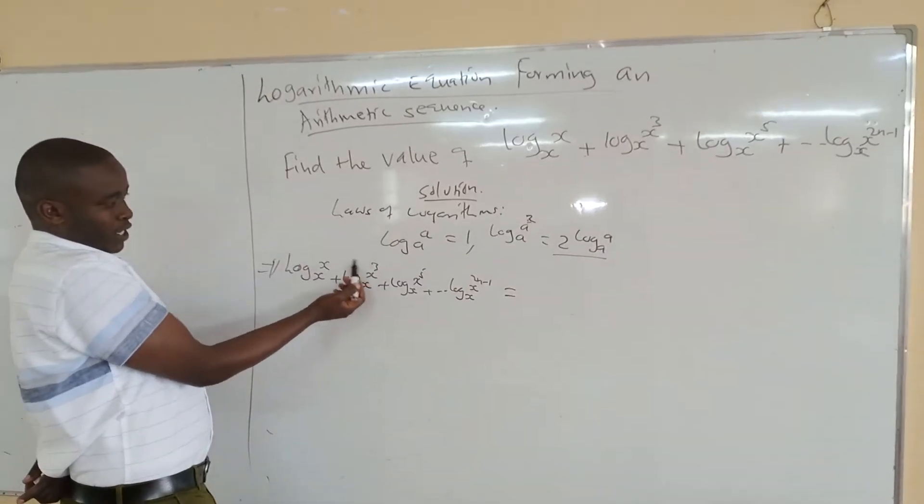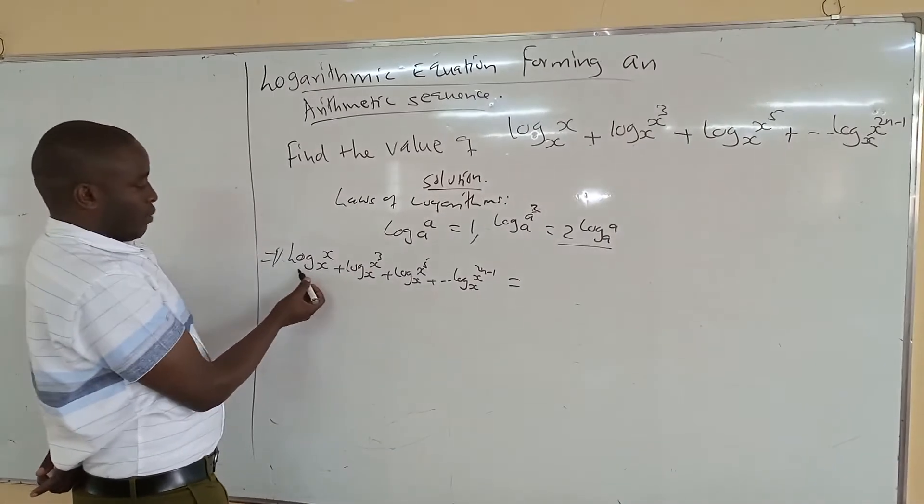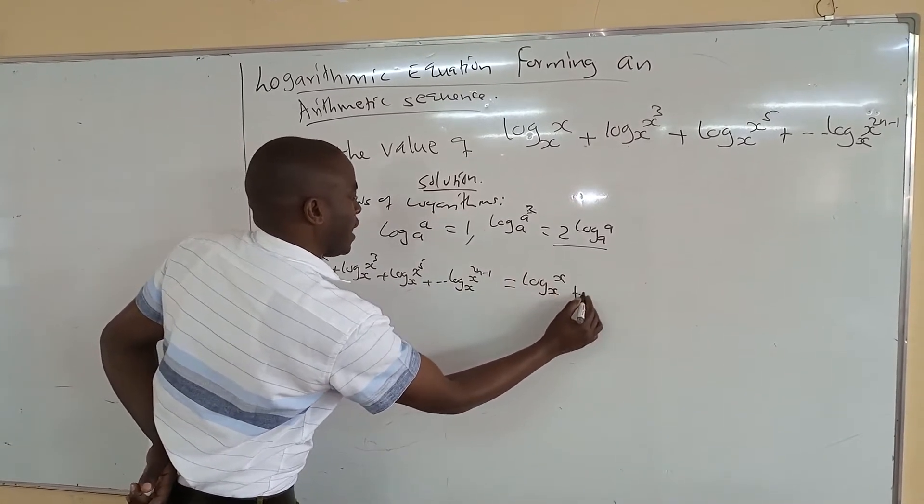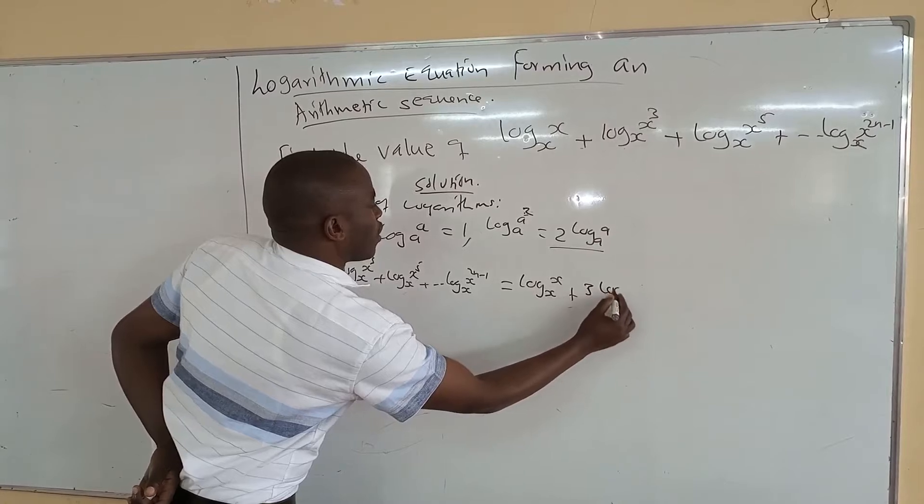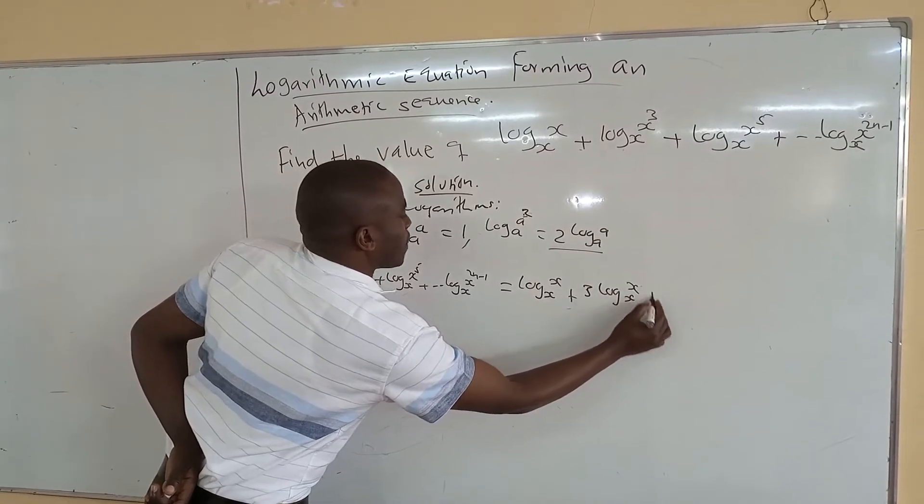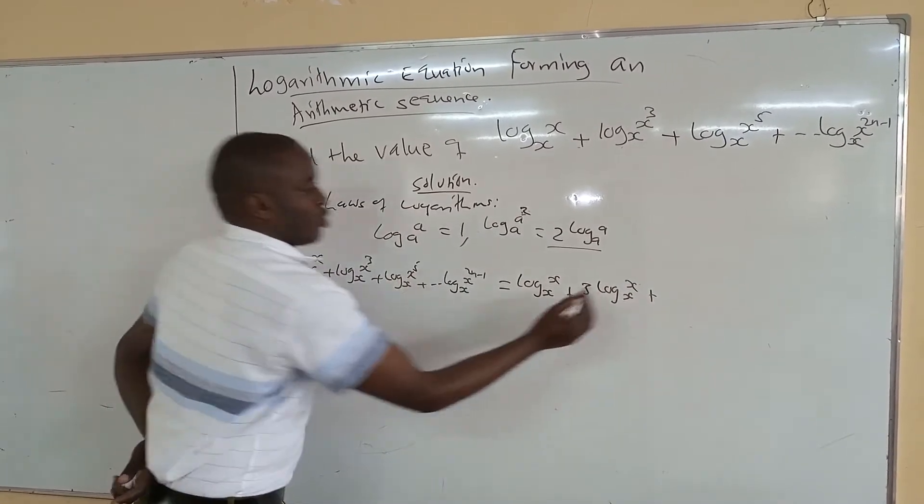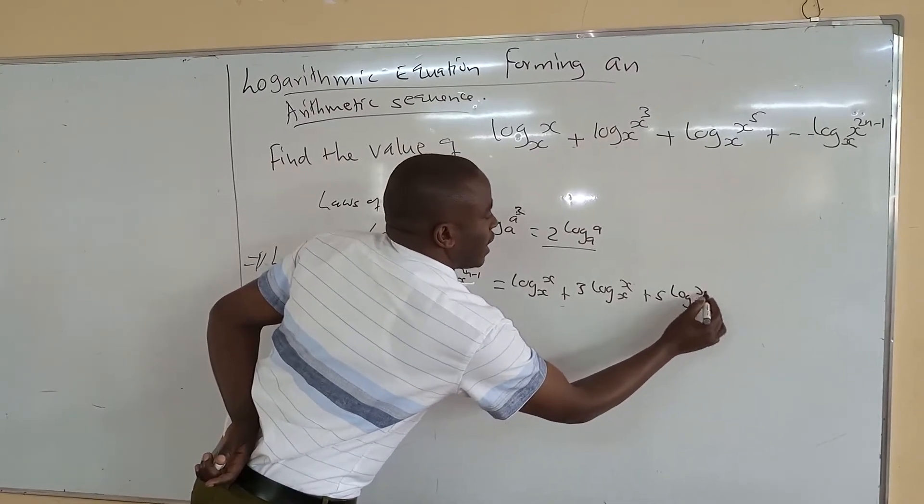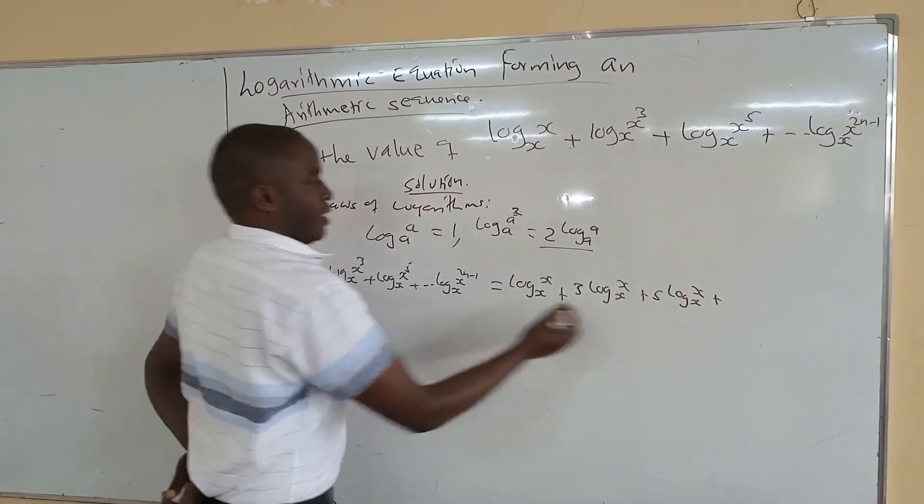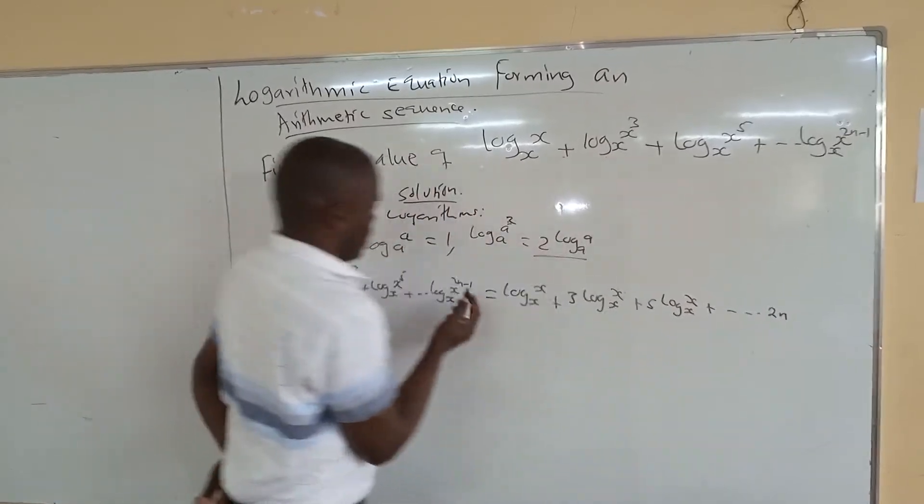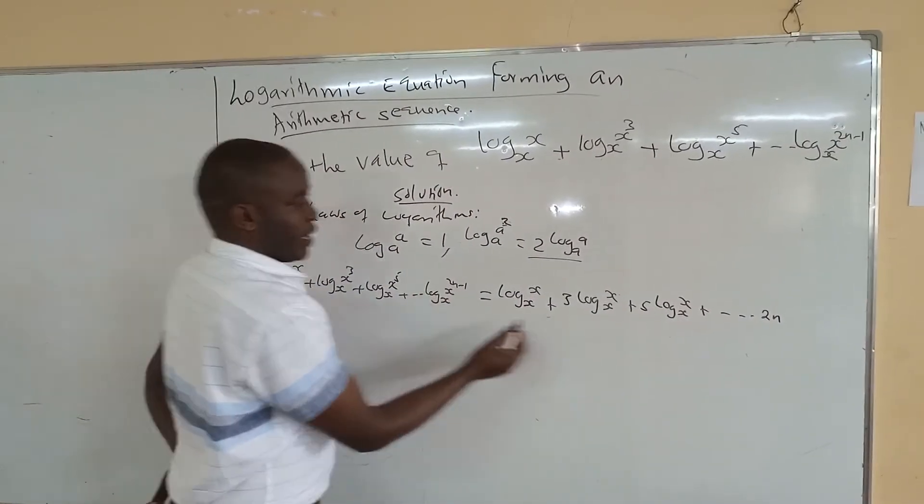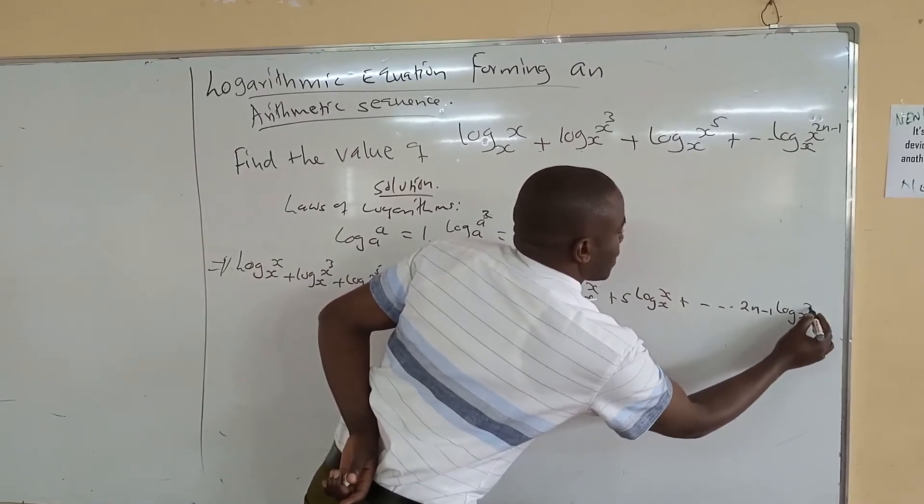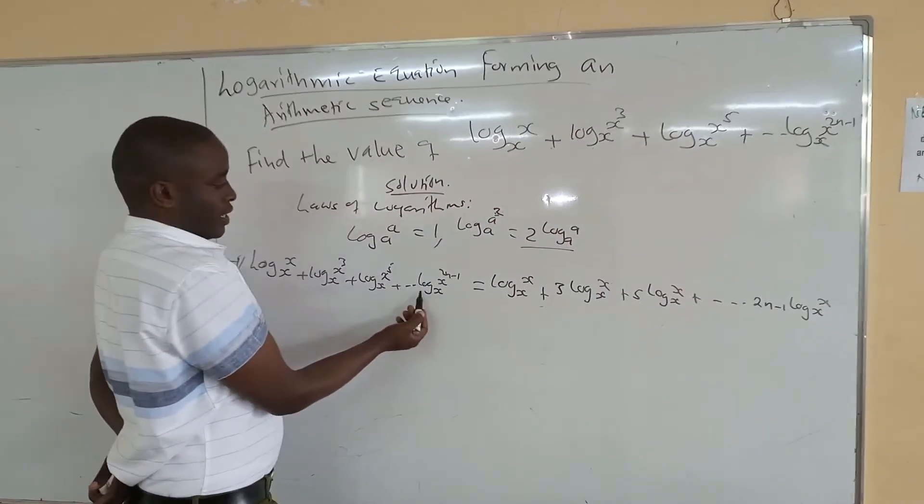So we can also bring this back. So we shall be adding log x x plus 3 log x x plus, this becomes also 5 log x x plus 2n. That is, if we bring it here, it becomes 2n minus 1, 2n minus 1 log x x, log x x.